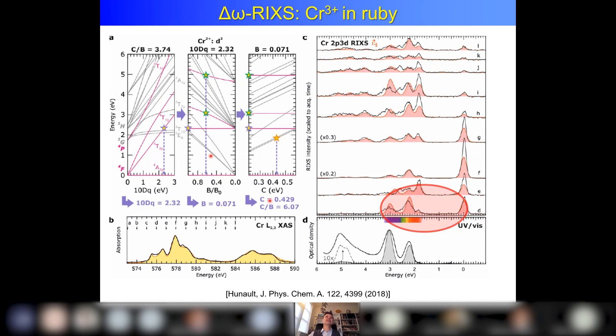This is very nice — but people doing optical spectroscopy could do this 50 years ago. The new thing is that now you can do this with x-rays, so in a protein where your optical spectrum is dominated by π→π* transitions, you can still look at the dd transitions.